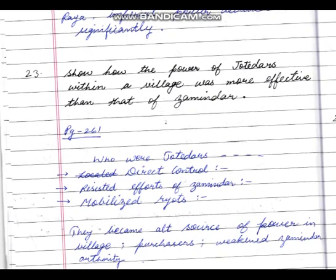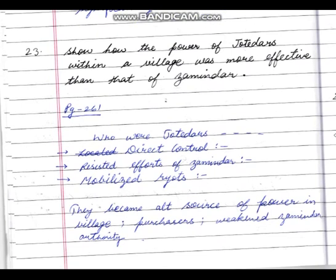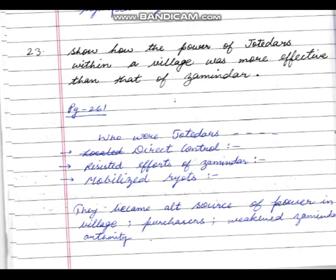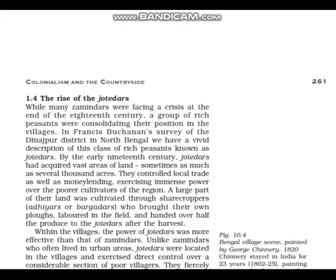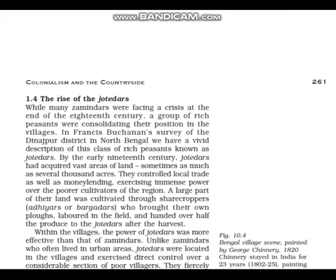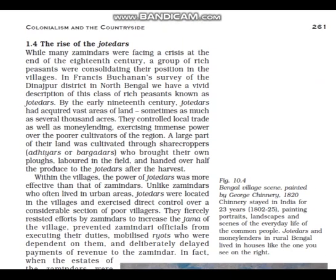Question number 24: 'How was the power of Jotadars within a village more effective than that of Zamindars?' Start with the introduction of who Jotadars were. You can explain only the Jotadar in the introduction.